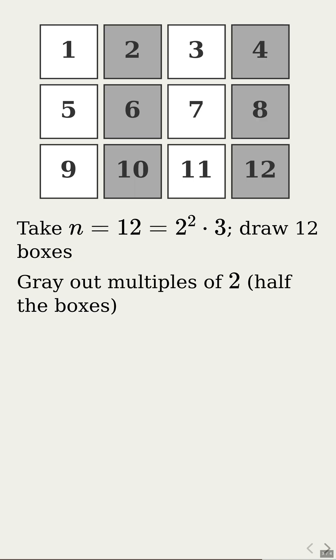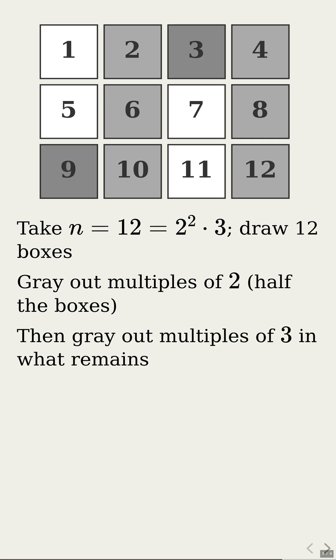Now from what remains, gray out every multiple of 3. That removes one third of the remaining numbers. Only 4 boxes are left: 1, 5, 7, and 11. Each of them is co-prime to 12.